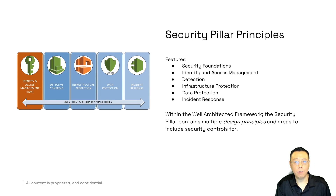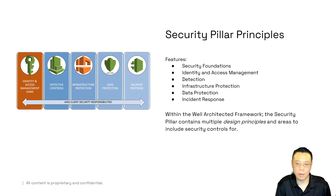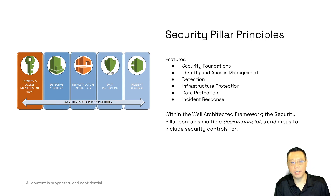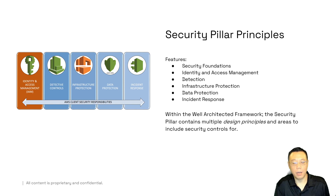The security pillar design principles include security foundations — which means basic CIA: confidentiality, integrity, and availability. You're already meeting some of these based on things like having multiple AZ replication, multiple regions, going serverless whenever possible. You should also look at identity access management, which is what we have IAM and SSO Federation for. We have detection-based controls and infrastructure protection — hence the EC2 instance that needed OS patching and other network security requirements — as well as data protection.